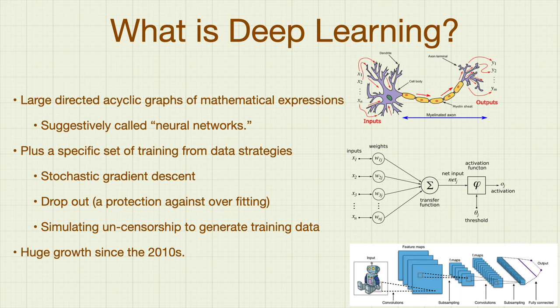Deep learning was not just large neural nets — it was also some name-brand techniques that took a lot of time to develop. Stochastic gradient descent improvements for the optimizer to solve for the neural net weights. The drawing is called the topology; the neural net isn't functional without weights. Dropout as a protection against overfitting — overfitting is when the net does very well on training data but fails on future application data, one of the many reasons we evaluate models on held-out data, not training data.